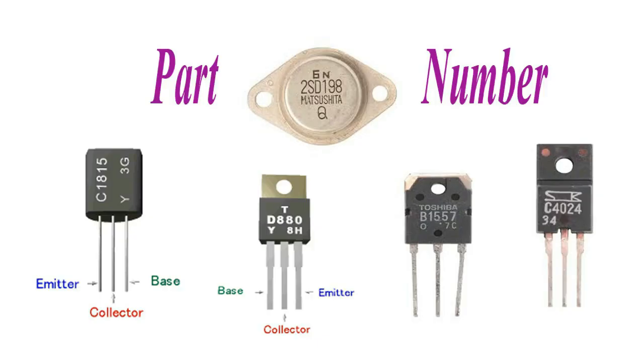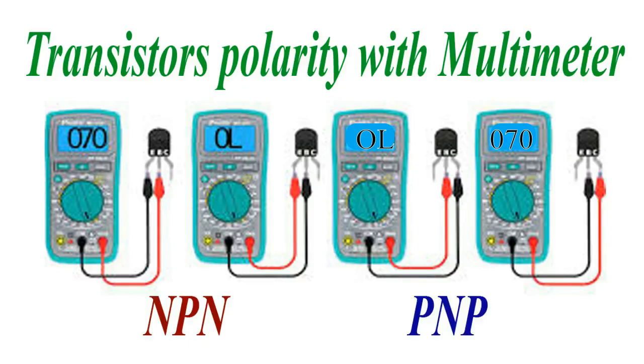Other ways include looking up the part number. Locate the part number printed on the transistor body, type it into a search engine to find its datasheet, which will specify the transistor polarity and pinout. Or use a multimeter to test for PNP and NPN characteristics.